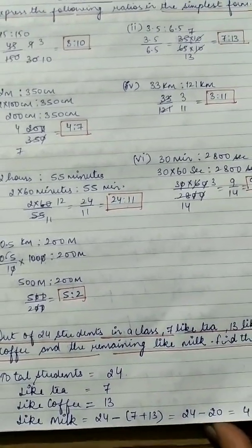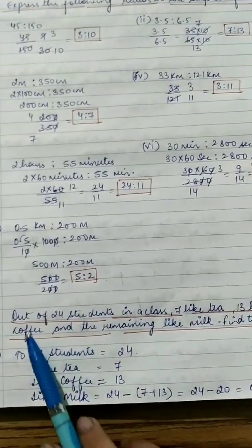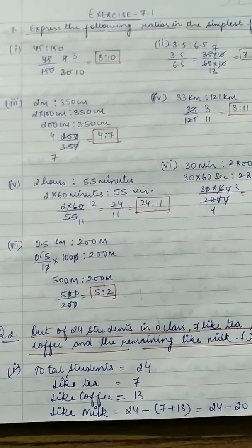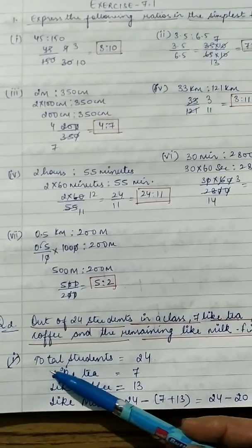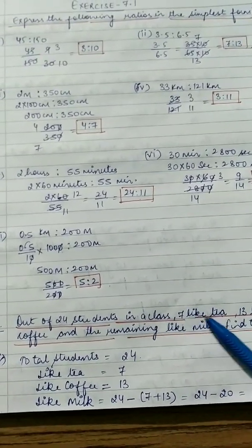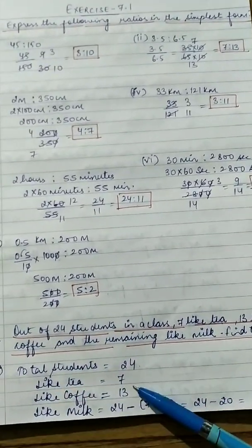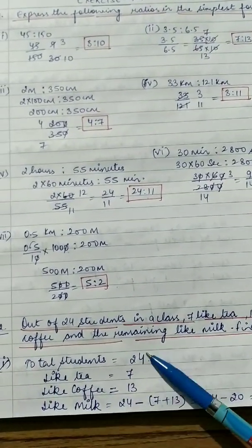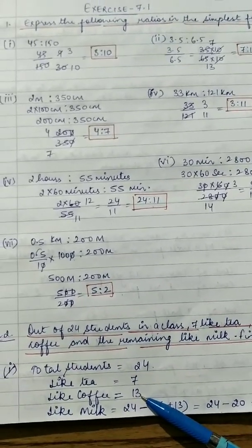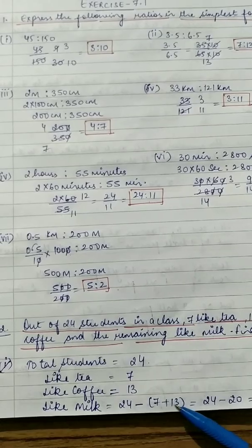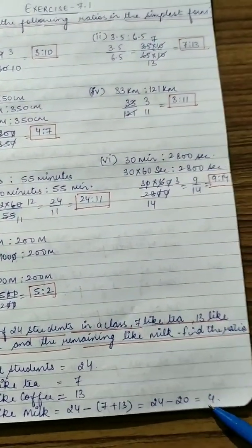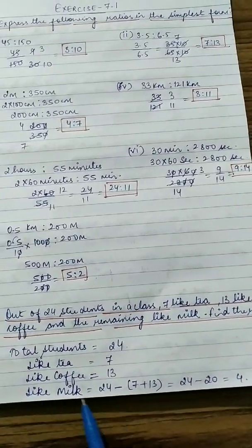Question 2: Out of 24 students in a class, 7 like tea, 13 like coffee, and the remaining like milk. First, note total students = 24, tea = 7, coffee = 13. To find milk: 24 − (7 + 13) = 24 − 20 = 4. So 4 students like milk.